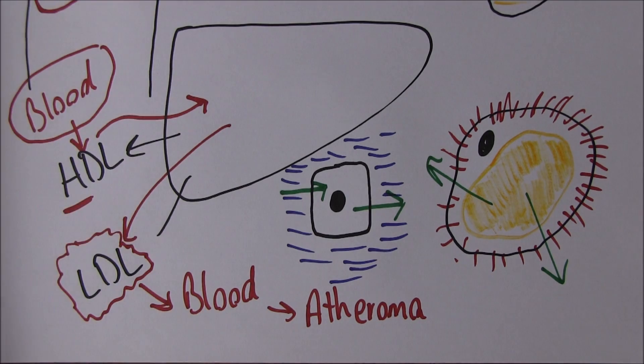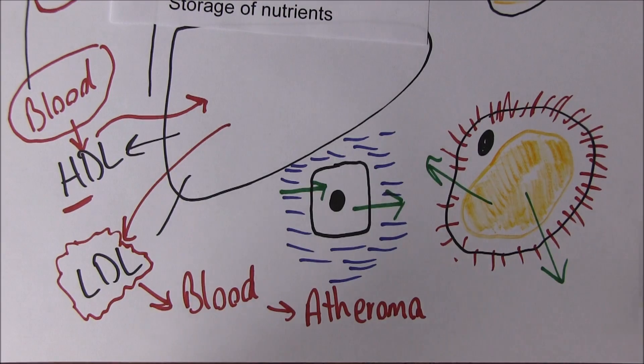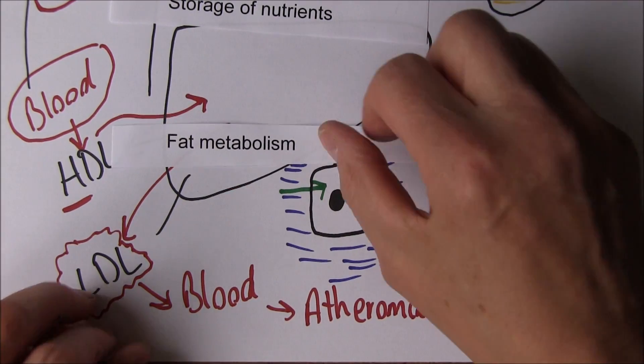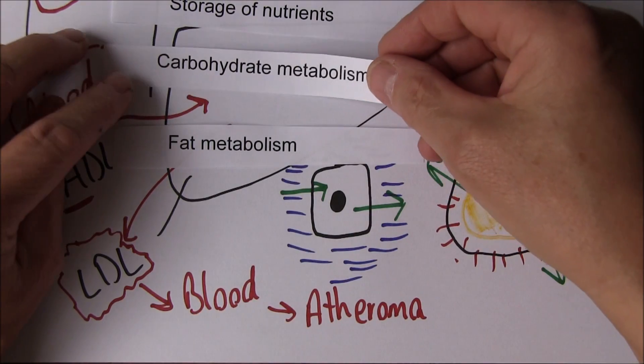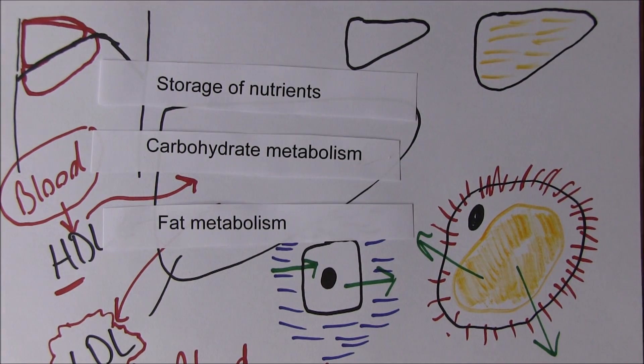So that was a quick review where we looked at the storage of some nutrients, we looked at carbohydrate metabolism, and we looked at some aspects of fat metabolism. In the next clip we'll go on and think about the liver's activity in protein metabolism.